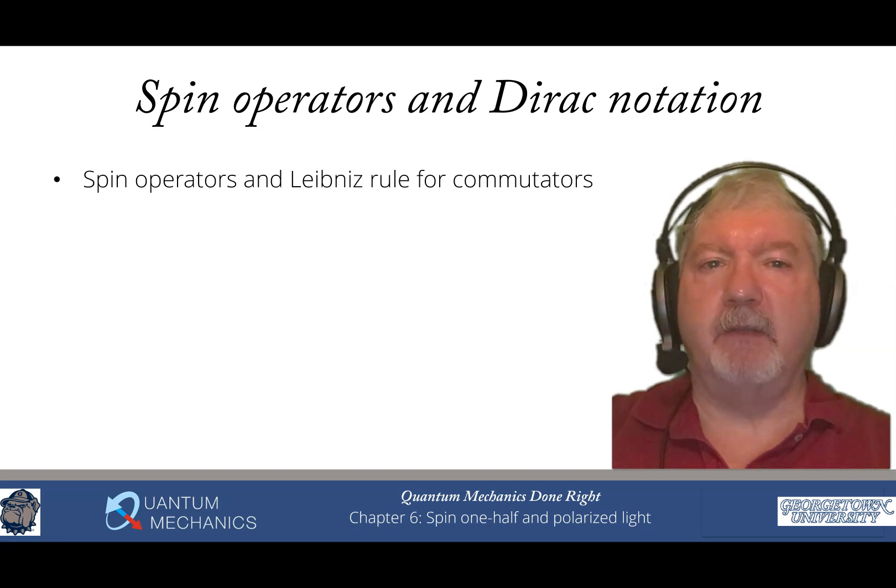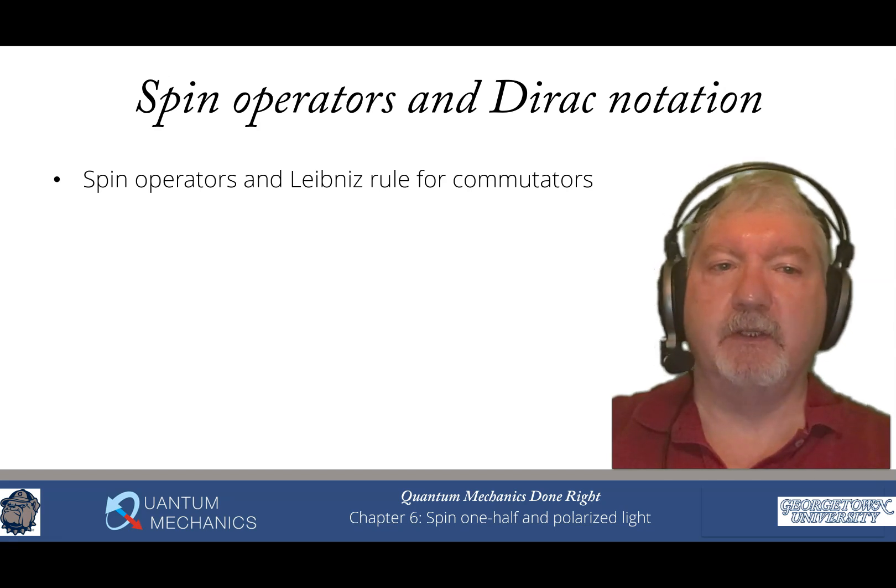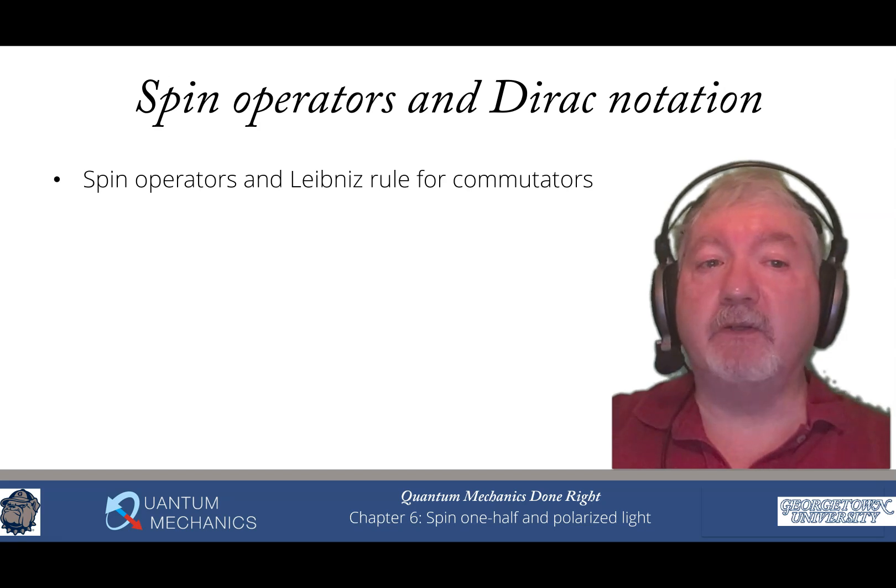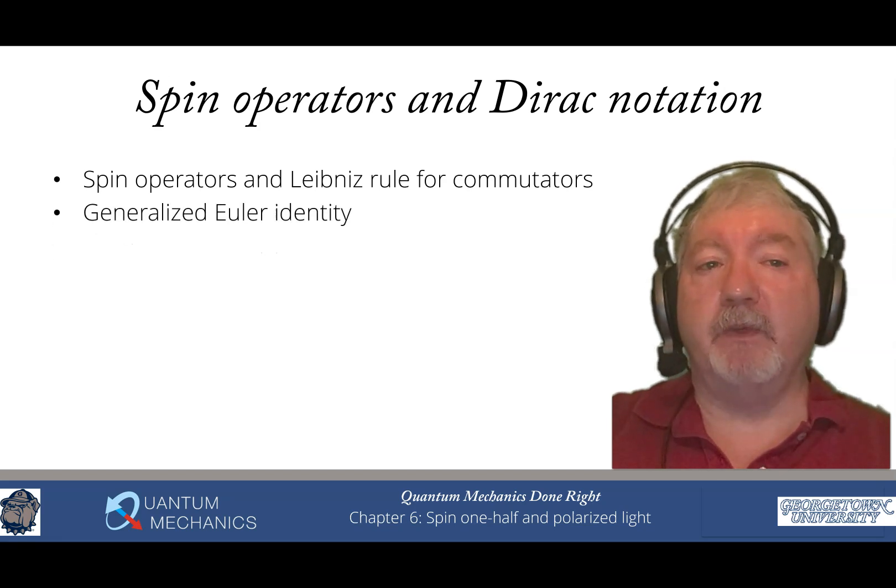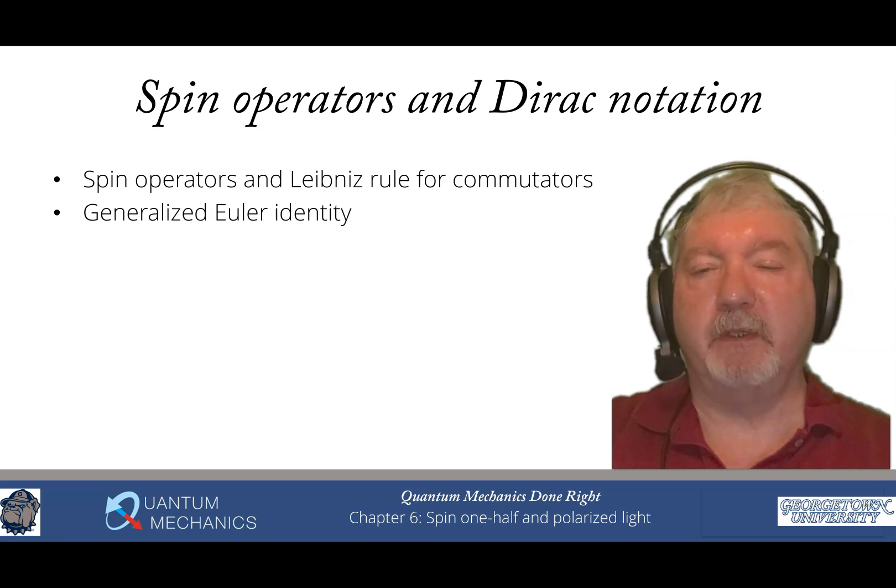So it really doesn't require any postulating what spin is or what the commutation relations are, what the operators are. It naturally arises simply by thinking carefully about what is happening in a Stern-Gerlach experiment. After that, we work with the matrix representation of spin, which gets us into the Pauli spin matrices.